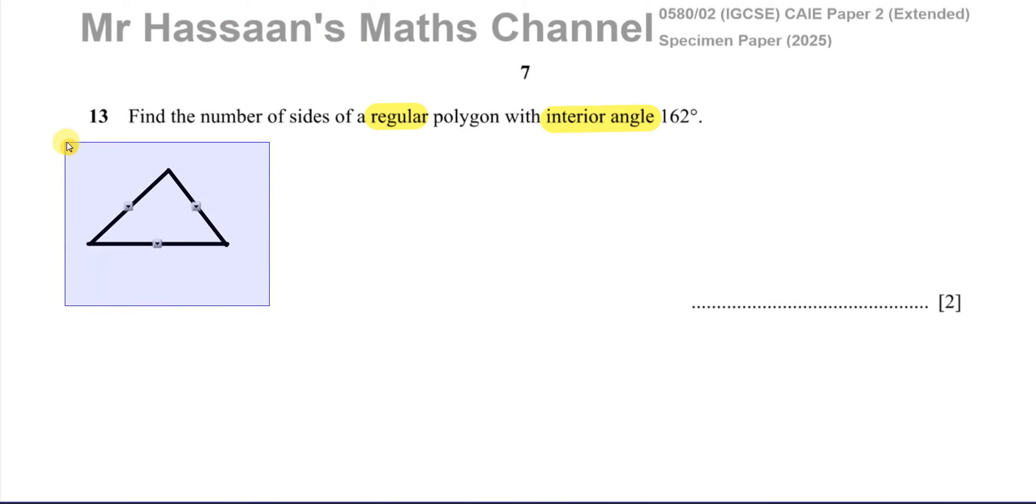We want to find the number of sides of a polygon which is a regular polygon and each of the interior angles is 162 degrees. So if I make a little sketch here to clarify the situation, supposing this is like part of the polygon, the interior angle is 162 degrees.